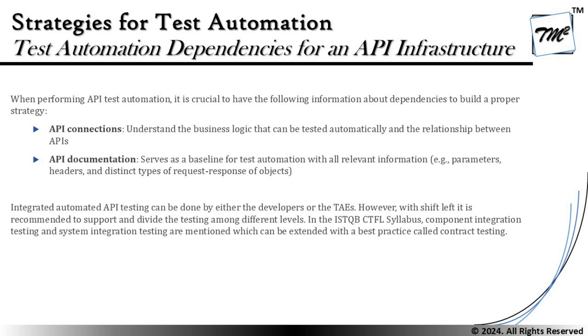To get started, we are giving a quick introduction first and then getting into a deep dive of what exactly contract testing is all about. When performing API test automation, it is crucial to have the following information about dependencies to build a proper strategy. Number one: the API connections — understand the business logic that can be tested automatically and the relationship between the APIs.